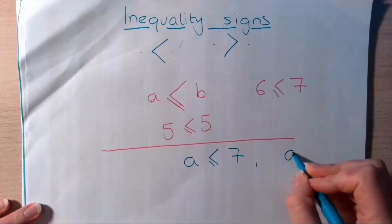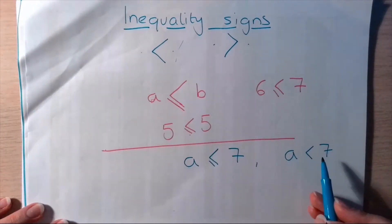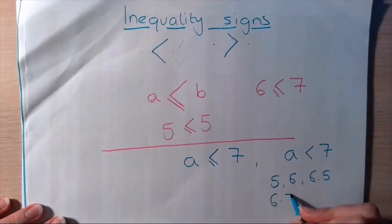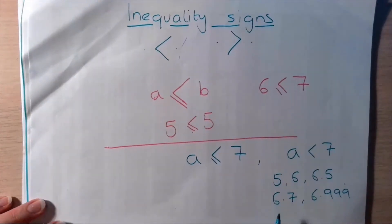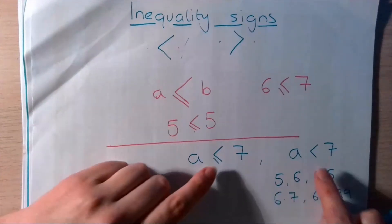If I had written this, though, a is less than 7. What that means is that a can be any number up to 7, but not 7. So, it could be 5, it could be 6, it could be 6.5, it could be 6.7, it could be 6.999 recurring. As long as it isn't 7, it can be any number up to 7. So, they're just some random numbers I've picked out of my head. But, that one there, 6.999 recurring, it could go on forever as long as we don't get to 7. And, that's why these signs are really important to know the difference.